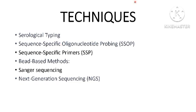HLA typing can be performed using various methods, each with its own advantages and limitations. The choice of method depends on factors such as the purpose of testing, level of resolution required, and available resources. The common methods include serological typing as the traditional method, and molecular methods such as sequence specific oligonucleotide probing, sequence specific primers, bead-based methods, Sanger sequencing, and next generation sequencing.